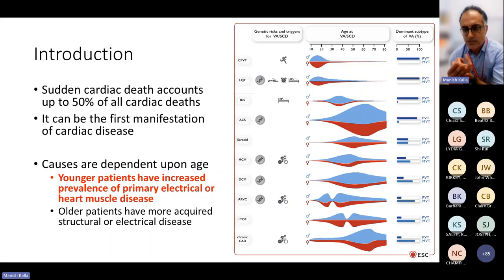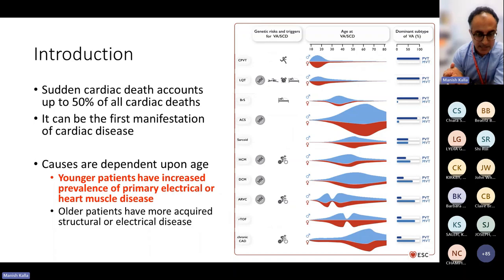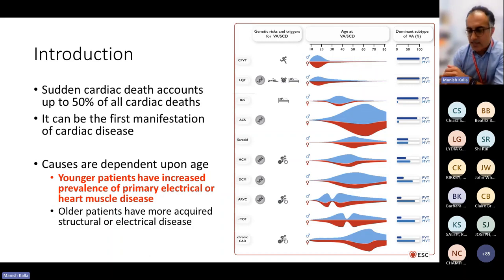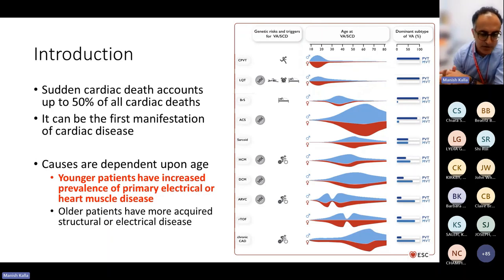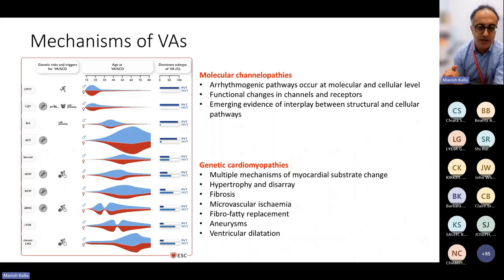This diagram from the 2022 ESC guidelines for ventricular arrhythmia shows that sudden cardiac death is very common. It can often be the first manifestation of cardiac disease, particularly in the Inherited Cardiac Condition Service. These causes are dependent upon age. Younger patients tend to have primary electrical or structural disease, while older patients acquire conditions such as coronary artery disease. We focus on molecular channelopathies and genetic cardiomyopathies.